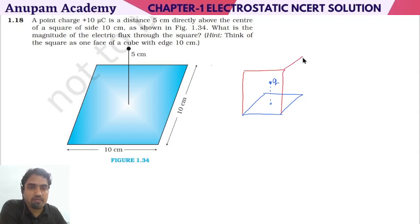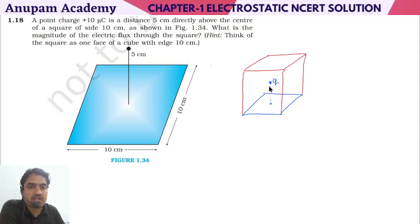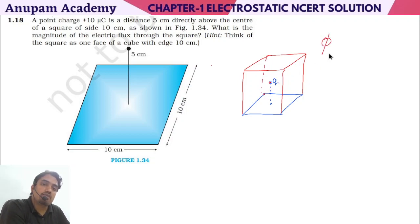Now, the total flux passing through the cube is equal to Q divided by epsilon naught, by Gauss's Law.